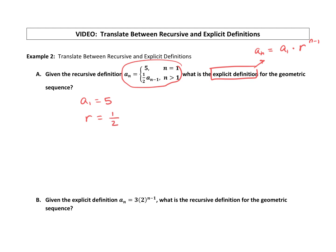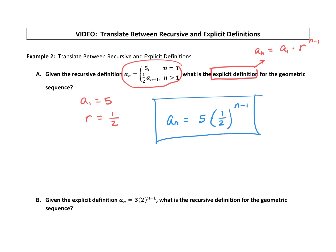We have the two pieces of information. Now let's write our explicit definition. a sub n equals the first term, 5, times our ratio — I'll put this in parentheses because it's a fraction — so there's my 5 times the ratio raised to the n minus 1 power. There's the explicit definition.